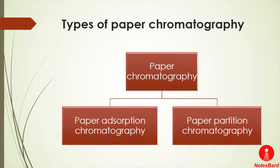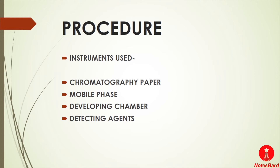Most paper chromatography methods refer to paper partition chromatography, where moist paper is used for separation. Now let's discuss the equipment used. The first instrument is the chromatography paper, commonly Whatman filter papers of different grades such as number one and number two. These papers should have a large proportion of cellulose and pores in their structure.